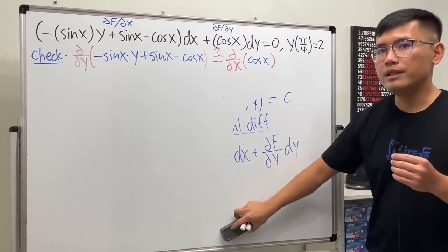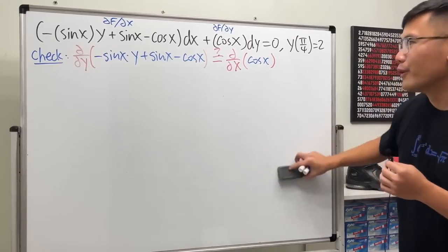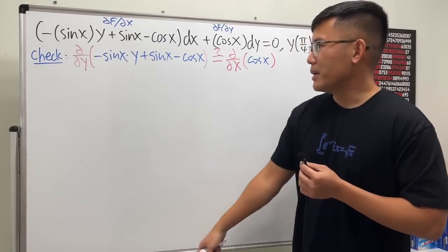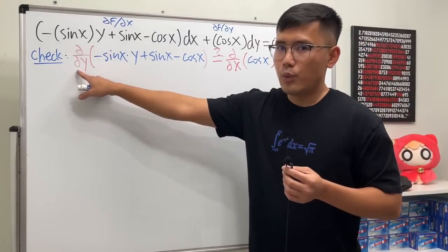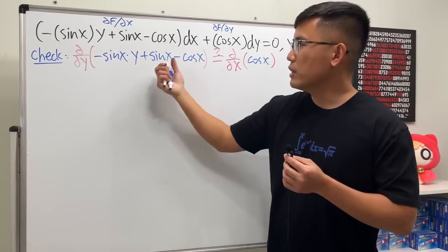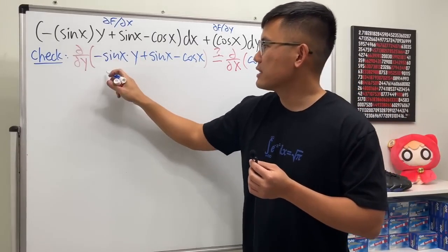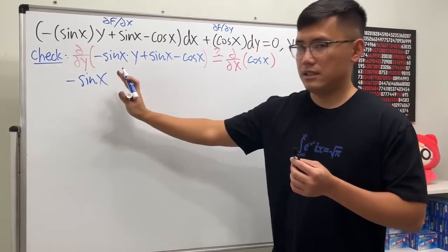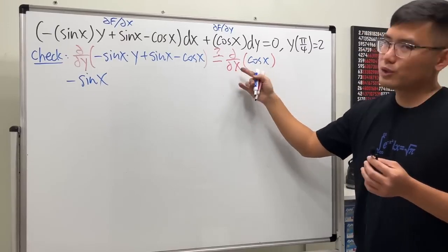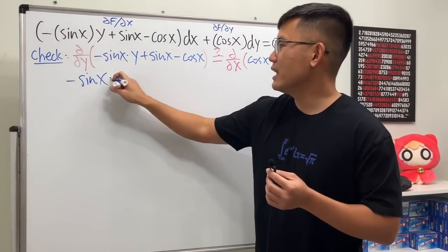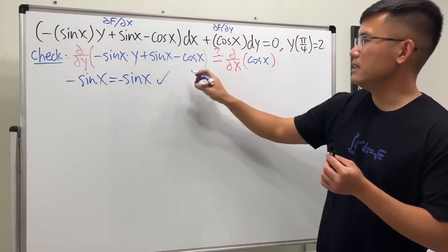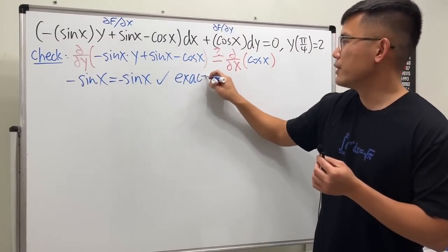If they are the same, that means they came from the same function and we can integrate. In the y-world all the x's are constants, so this term is y to the first power — differentiating gives negative sine x. On the right-hand side, the derivative of cosine x with respect to x is also negative sine x. They are equal, meaning this is indeed an exact differential equation.